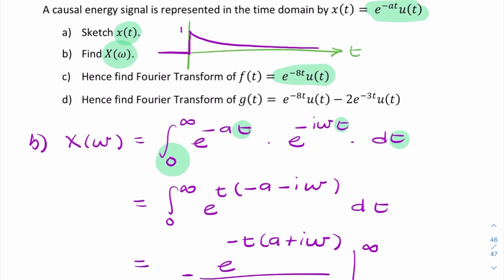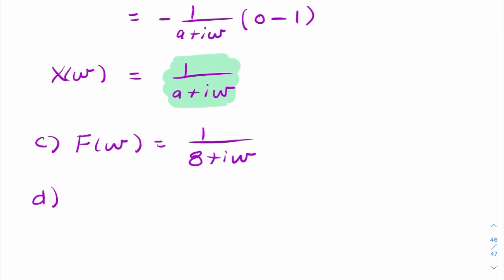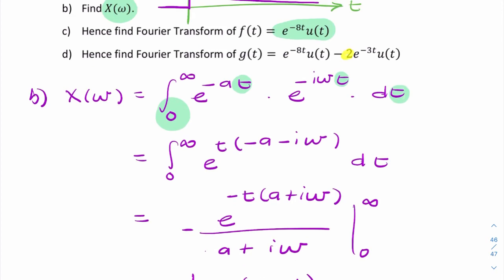Now, for part d, same question, this time function's called g, and we have that same function, and then we have another function here with a different constant, three, and we've got this constant here, a scaling factor. So it's a linear operation, so integration is linear, so because we've got two terms added together, I can simply add the Fourier transforms. So I can say g of omega equals one over eight plus i omega minus two times one over three plus i omega, and I got the two and the three from the two and the three there.